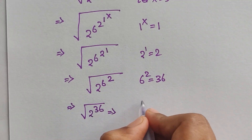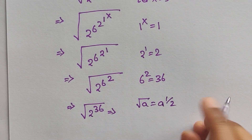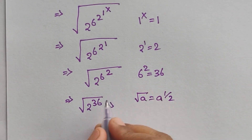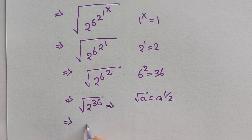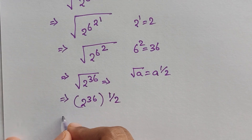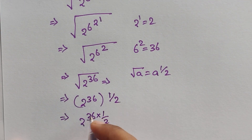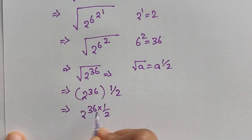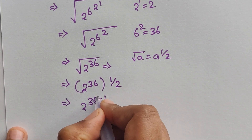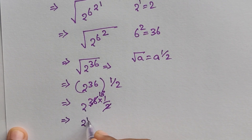Here we can apply the formula: square root of a equals a to the power of 1/2. So we can write 2^36 to the power of 1/2. This gives us 2 to the power of 36 times 1/2. The 2s cancel out: 36 divided by 2 equals 18, so we get 2^18.